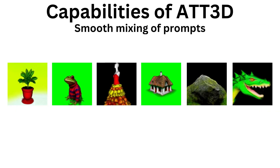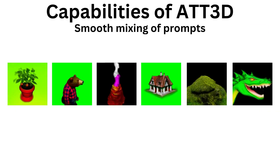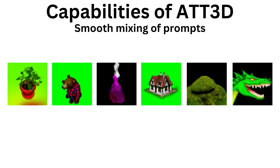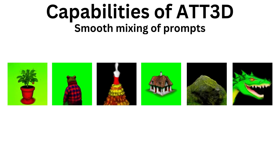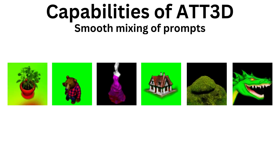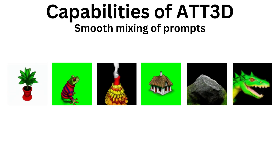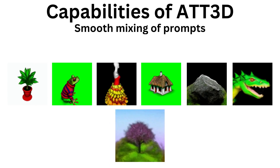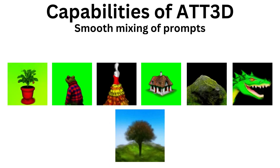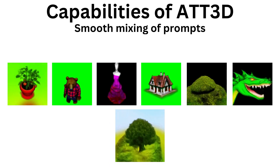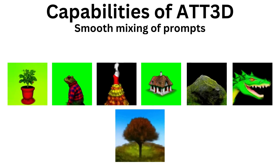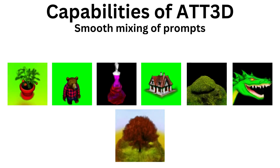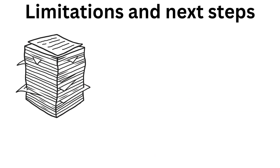We can now interpolate between text prompts to generate novel assets — for example, raid plants, characters, clothing, buildings, terrain, or even aging a baby dragon into an adult. This allows users to interactively take objects and create variants by smoothly combining them. You can also generate simple animations like seasonality, going from a tree in the spring to summer, then fall, and finally winter.